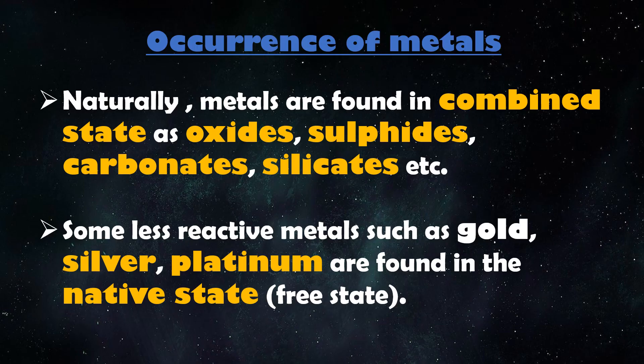Naturally, metals are found in combined states as oxides, sulphides, carbonates, and silicates. Some metals are less reactive, such as gold, silver, and platinum. These metals are found in their native or free state. An element is said to be in a native state when it occurs chemically uncombined in nature.